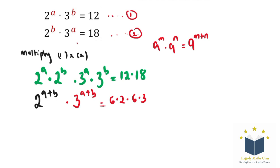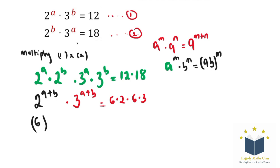So with this, there's another rule of indices I would like to mention here, which is when you have A to the power of M multiplied by B to the power of M, this is the same thing as saying AB to the power of M. So that is when you have the same power, you can multiply the bases together while you repeat the power. So using the same thing here, I'm going to have 2 multiplied by 3, which is going to give me 6 to the power of A plus B.